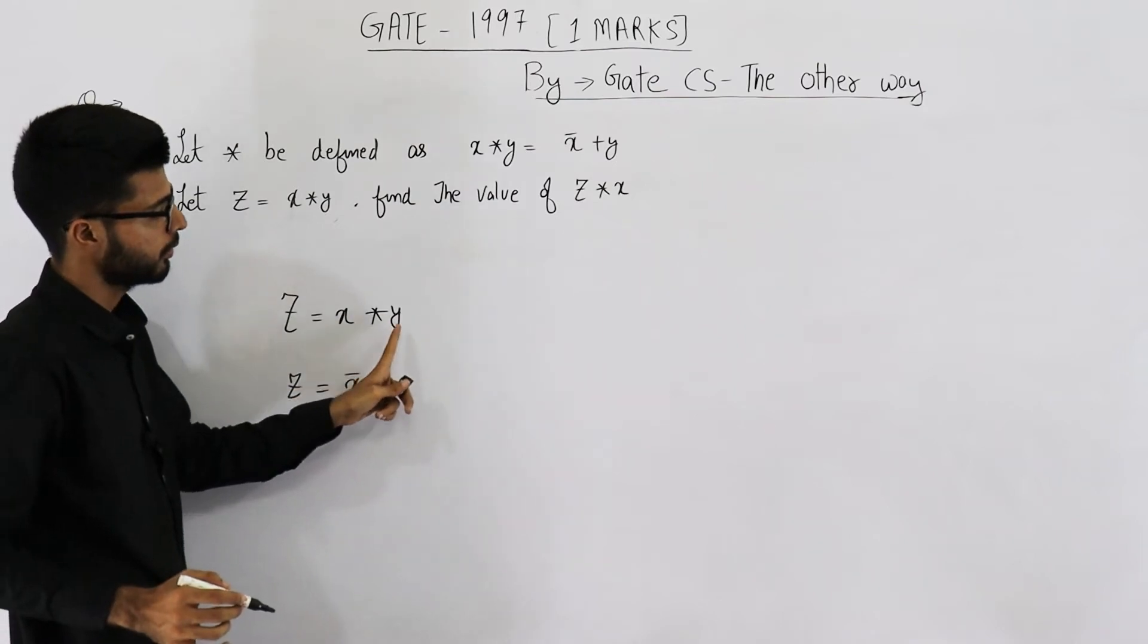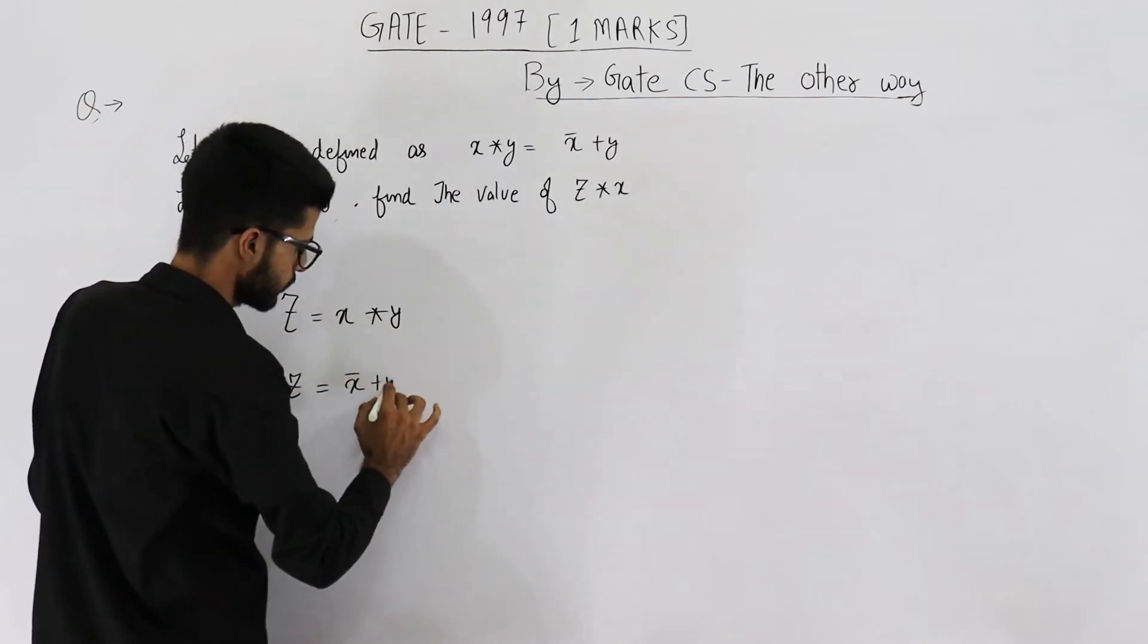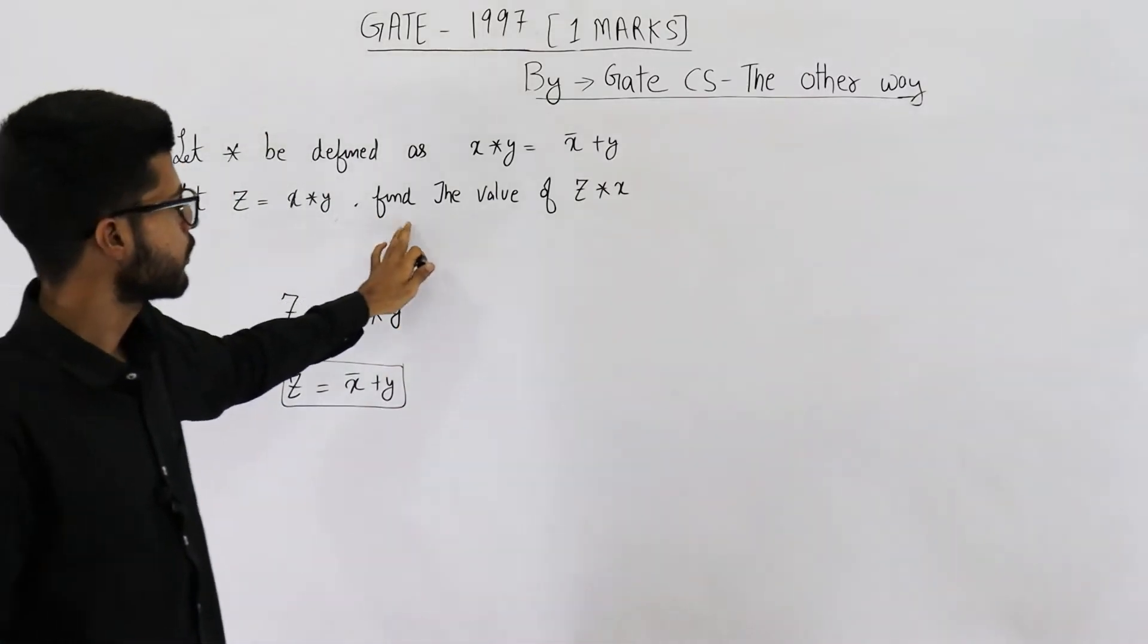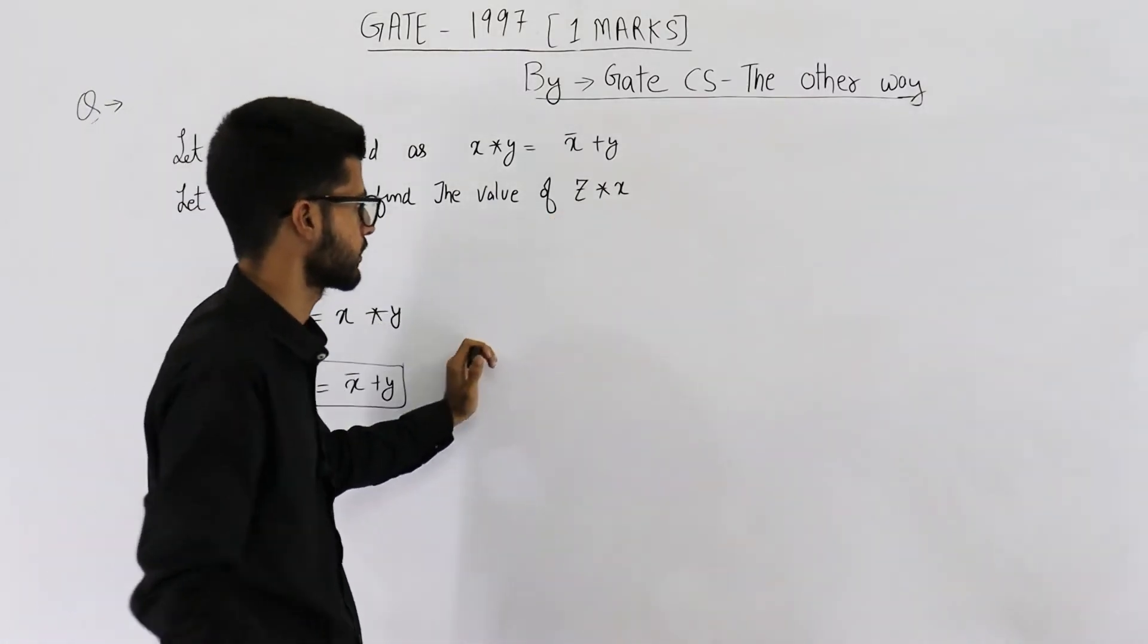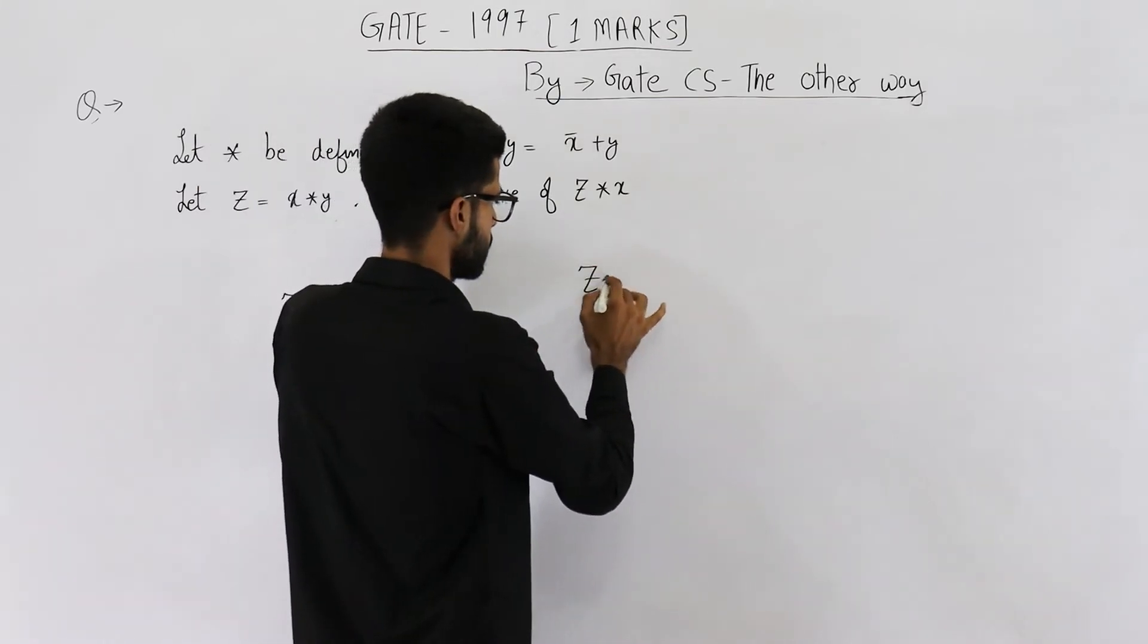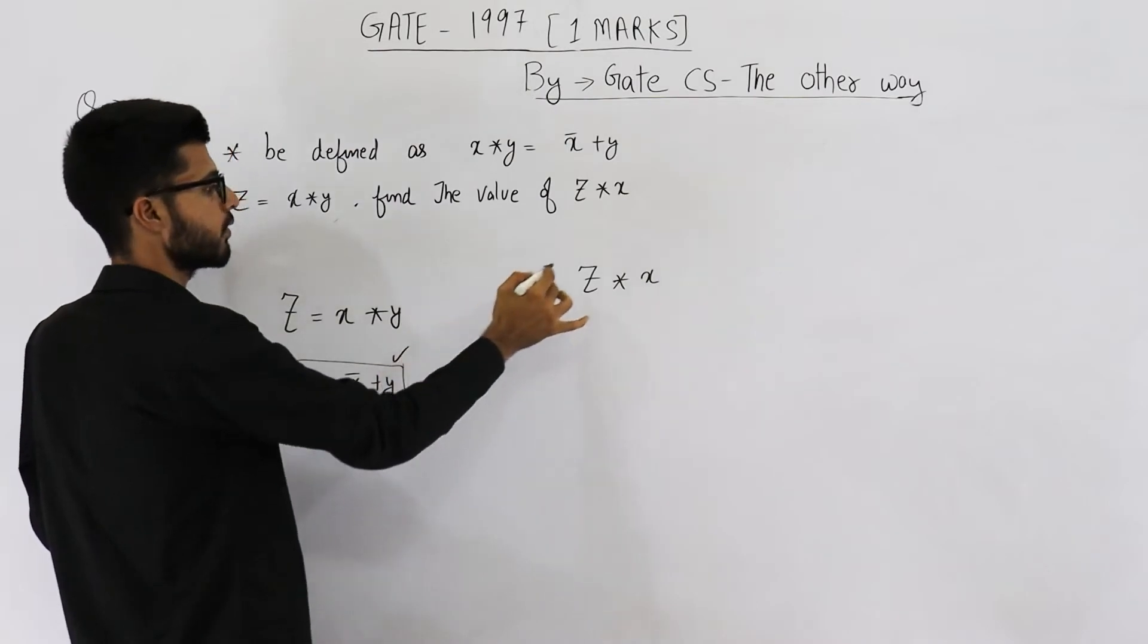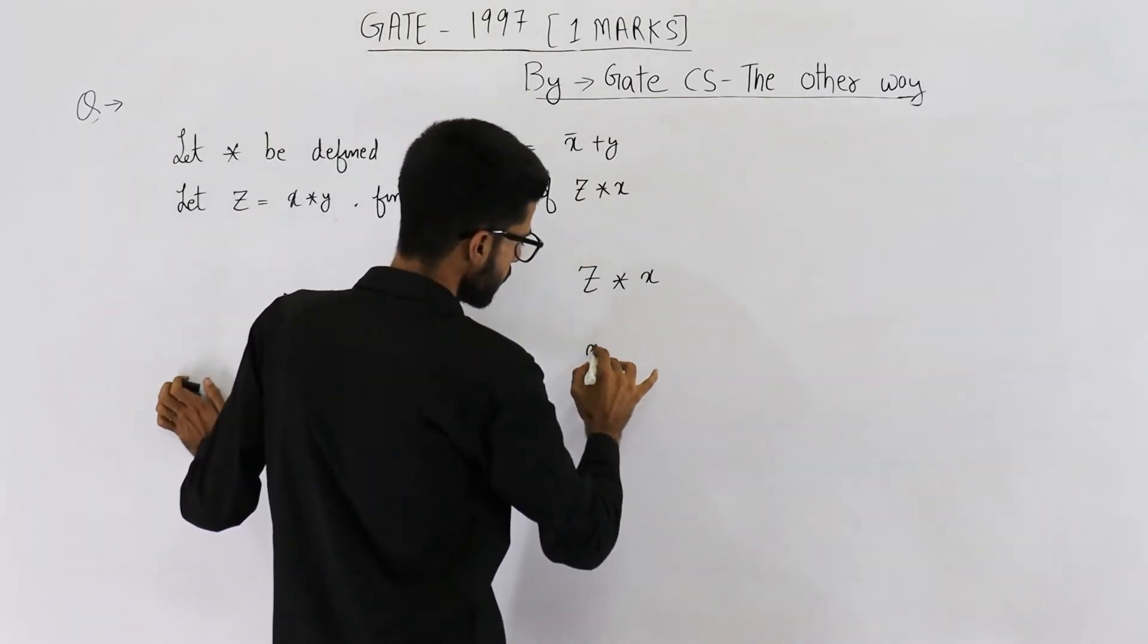You will get z equals x complement plus y. Then you are required to find out z star x. Substitute this value of z here: (x complement plus y) star x.